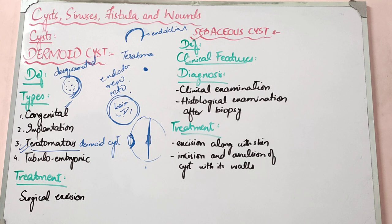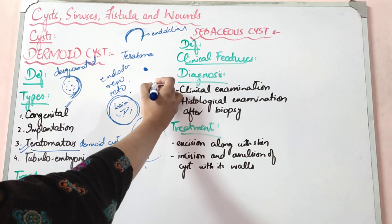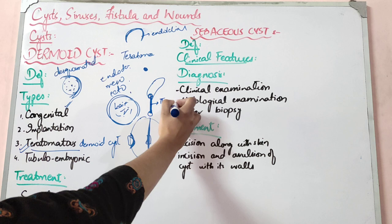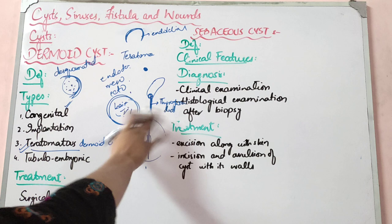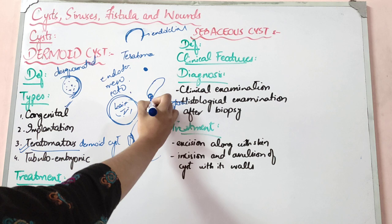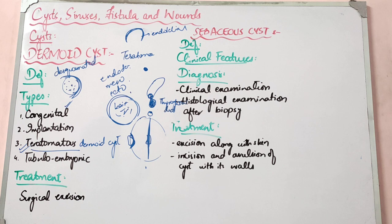Teratomatous dermoid cysts are made from totipotential cells. Tubular embryonic dermoid cysts arise from embryonic tubes in the body. For example, the thyroid gland originates in the oral cavity at the tongue and descends to the neck — the duct connecting these is called the thyroglossal duct. After development this duct normally ends, but remnant cells can persist. Sometimes these cells form a cyst — the thyroglossal cyst — seen in children as a cyst in the midline neck under the skin.